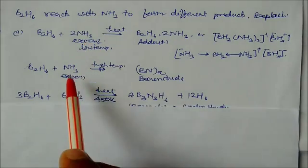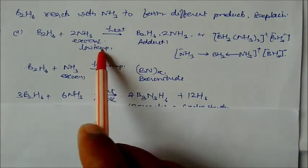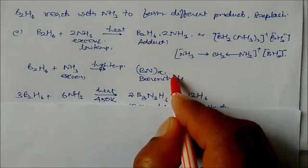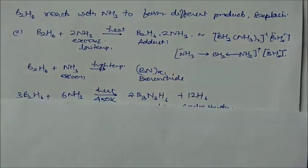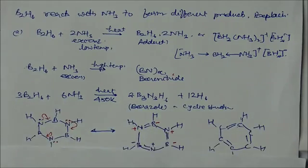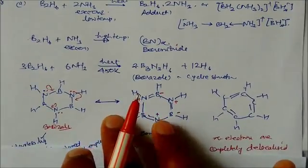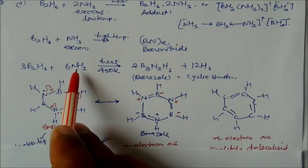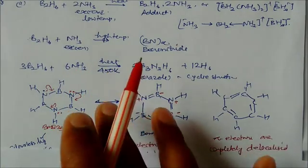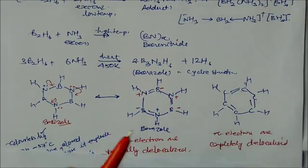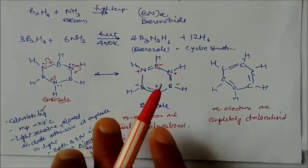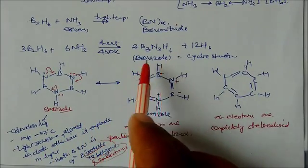If you take B2H6 with ammonia at normal temperature, around 450 Kelvin, it will convert into a structure called borazole. Borazole is a cyclic structure B3N3H6. I have drawn the structure here - this is boron and this is nitrogen. The nitrogen lone pair can delocalize, forming a double bond structure. This becomes positive and this becomes negative. These are resonance structures.